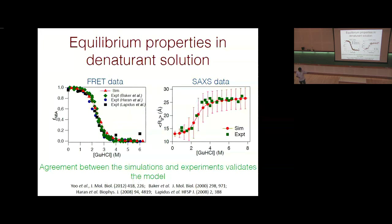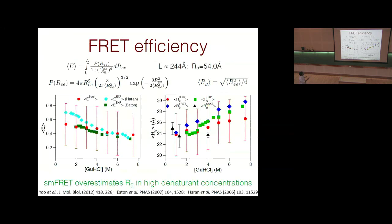To understand the source of discrepancy between SAXS and FRET, we examine the FRET efficiency — the efficiency of energy transfer between donor and acceptor dyes attached to the two ends of the protein. This is computed using the Förster equation, which involves the end-to-end distance distribution P(r_e), the end-to-end distance r_e, the Förster radius R_0 (a property of the two dyes), and the contour length L of the protein. The simulation data agree well with one set of experiments; the large error bars reflect the wide range of conformations in the unfolded state.